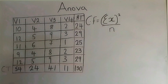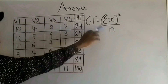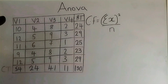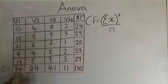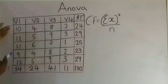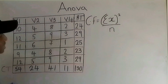The next step is to calculate the correction factor. The correction factor is given by the formula: (Σx)² / n, where Σx is the sum of all observations and n is the total number of observations. We have already calculated the sum of all observations as 130, and the total number of observations is 20, because we have 4 varieties repeating themselves 5 times — that is 4 times 5, which is 20.